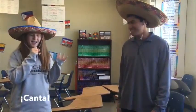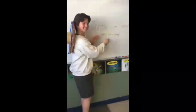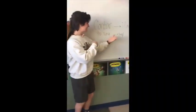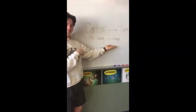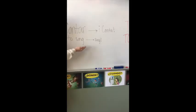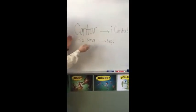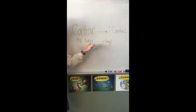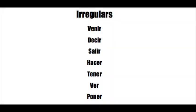First you take the verb cantar, then you change it to the he/she form, which in Spanish is él, ella, usted. Then you add exclamation points to make sure they do it. With these steps you are sure to win.